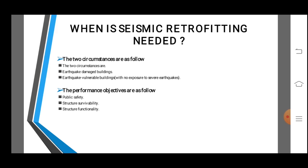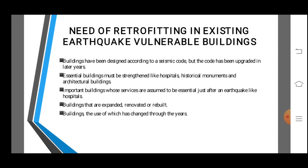The two circumstances are: earthquake-damaged buildings, and earthquake-vulnerable buildings with no exposure to severe earthquakes. The performance objectives are: public safety, serviceability, and structural functionality. The need of retrofitting in existing or weak, vulnerable buildings arises when a building has been designed according to the seismic code but the code has been upgraded in later years; essential buildings such as hospitals, historical monuments, and architectural buildings must be strengthened; important buildings where services are assumed to be essential just after an earthquake; and buildings that are expanded, renovated, removed, or whose use has changed through the years.